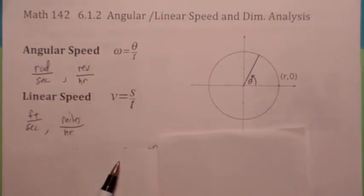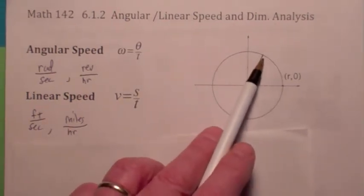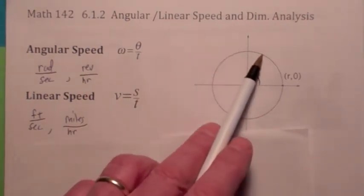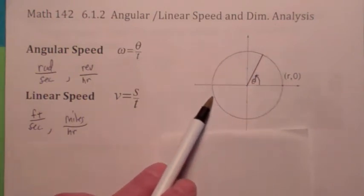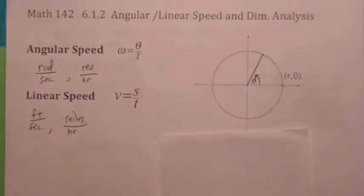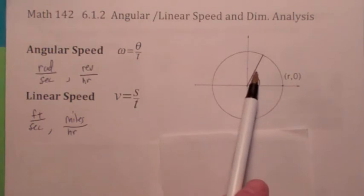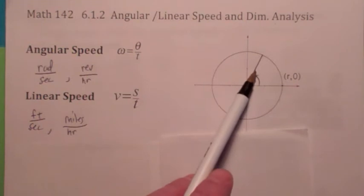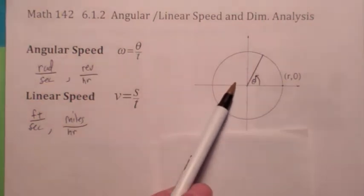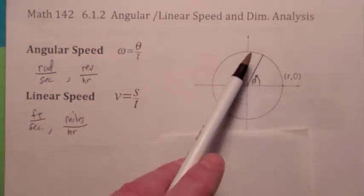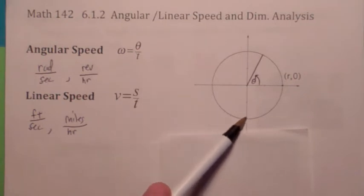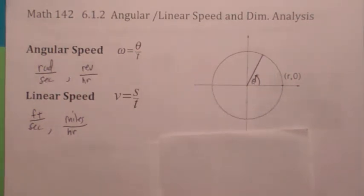The linear speed — think of the linear speed as: say you had a point on the outer edge of this wheel as it's spinning, they're asking how many feet per second is this point moving along the circle as it's spinning. They're different but related. Suppose instead of a point on the outer edge, we had a point halfway out on the radius — it's going to have a slower linear speed. This point halfway on the radius only moves a smaller distance when a point on the outer edge has to move the entire circumference. So it's going to have the same angular speed but a smaller linear speed.